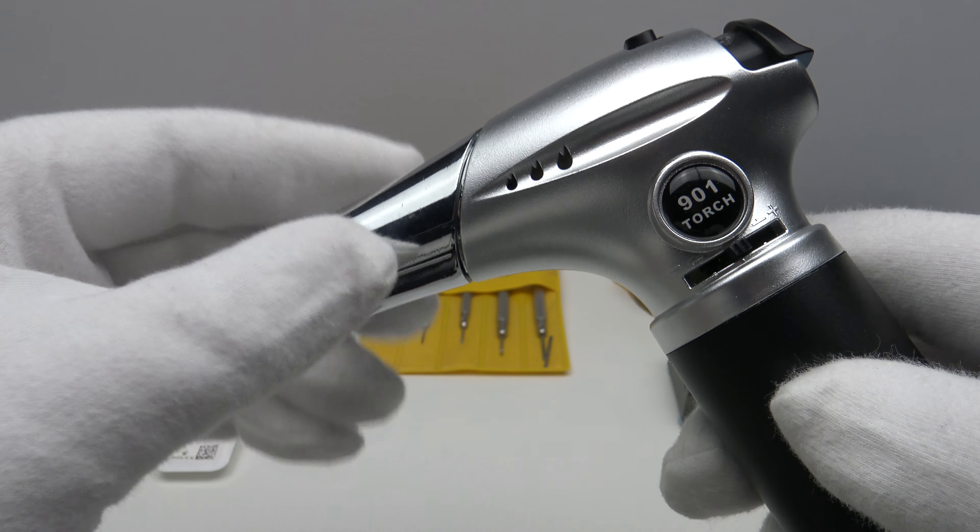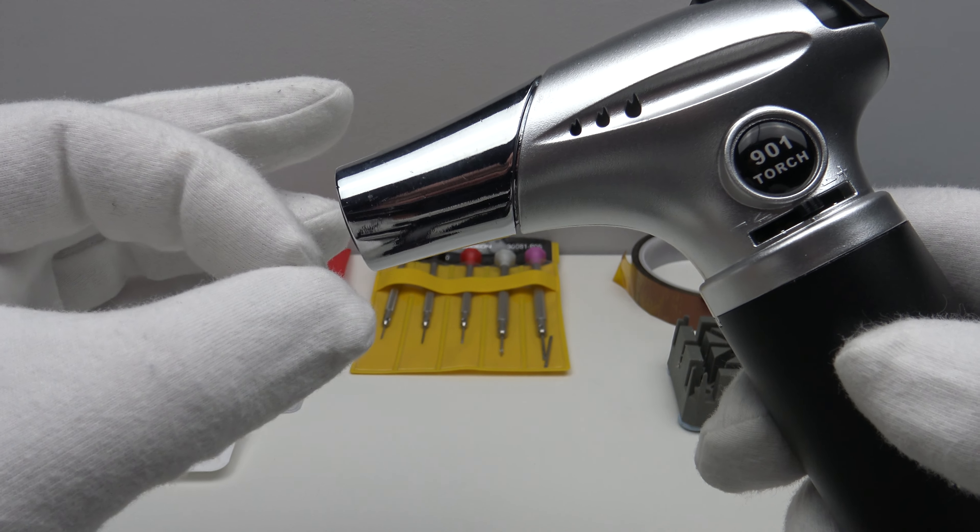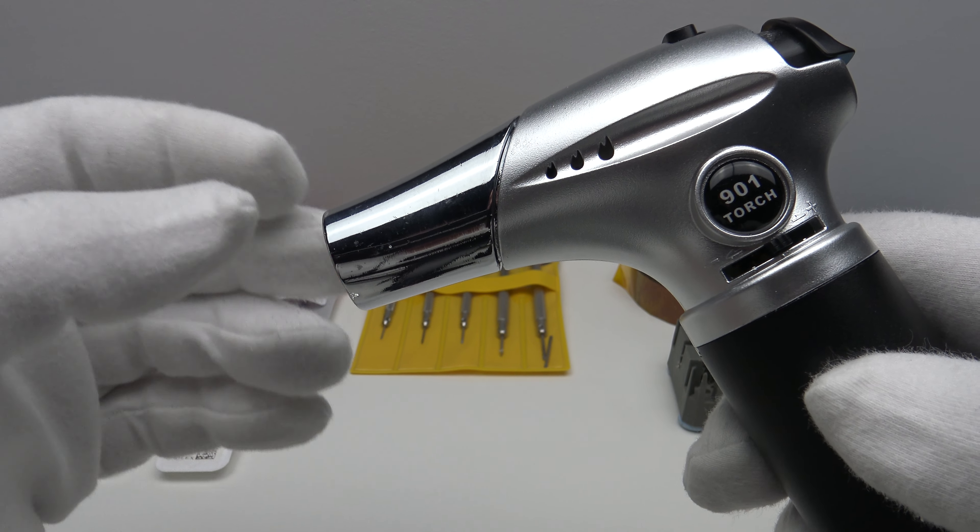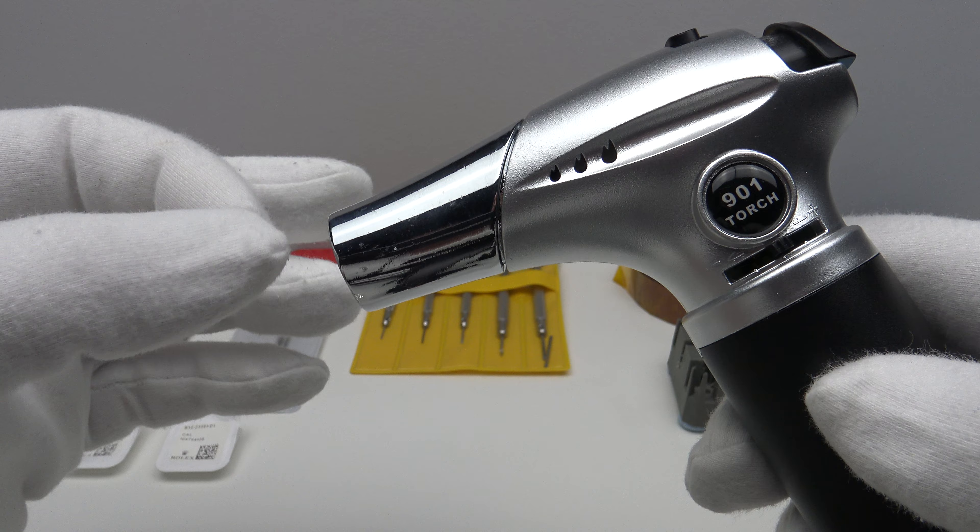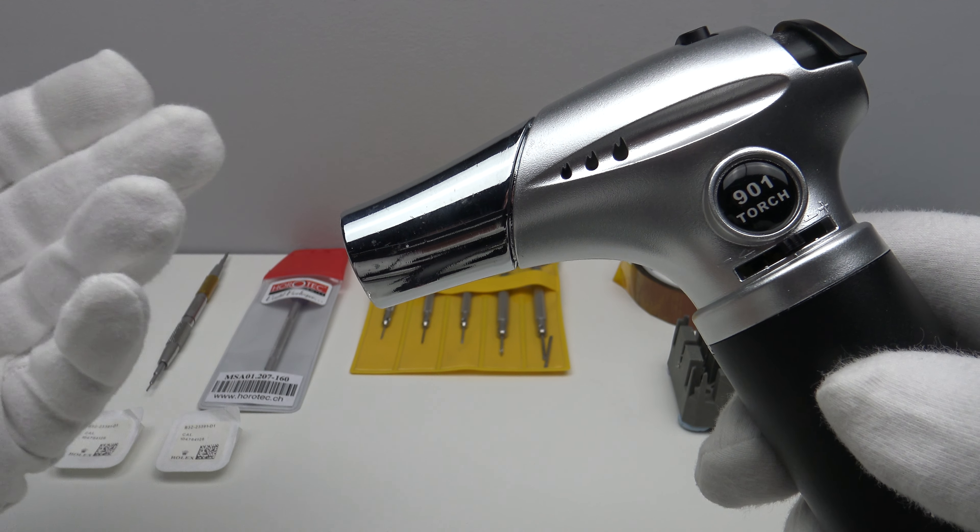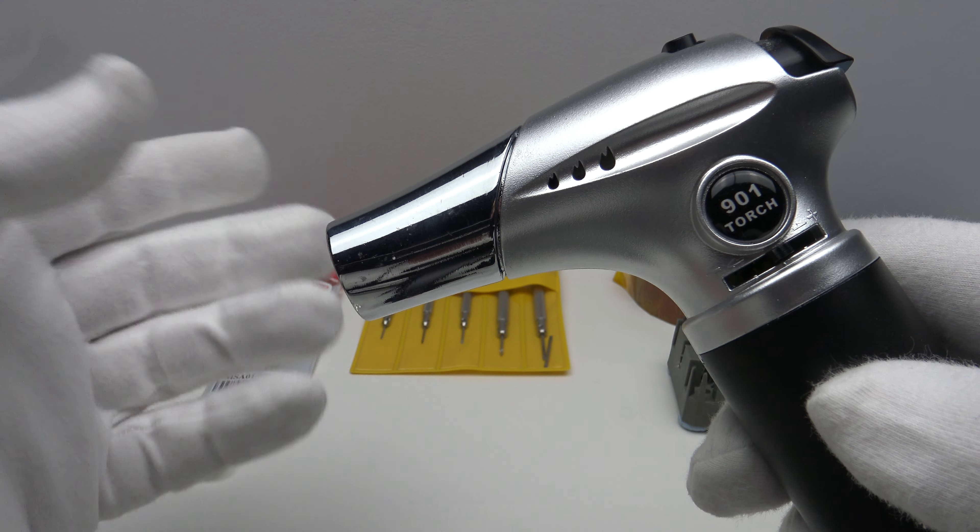Now, a word of caution. One only needs to heat up the thread lock in Rolex Oyster bracelet screws for 10 seconds. That will suffice in melting the thread lock and therefore making it easier to unscrew the screw from the bracelet. One doesn't need to heat it up for more than 10 seconds.